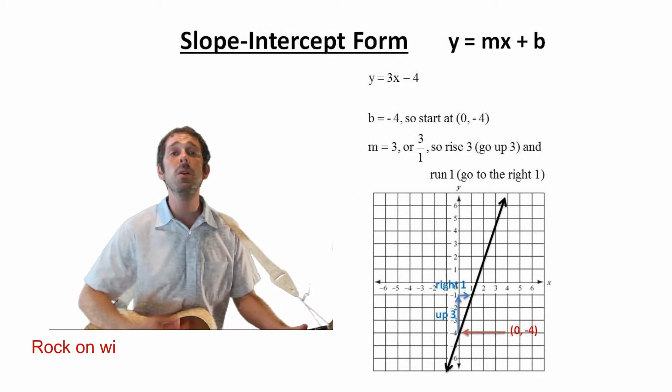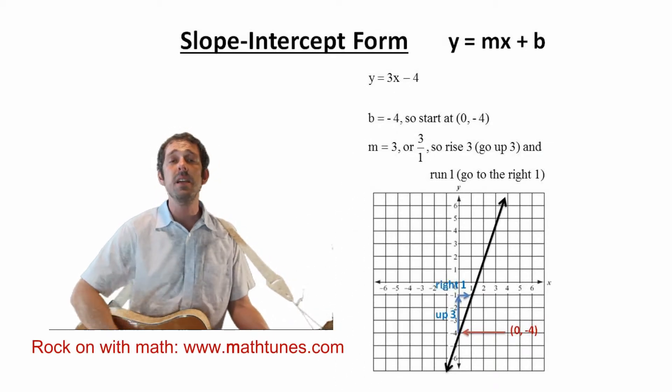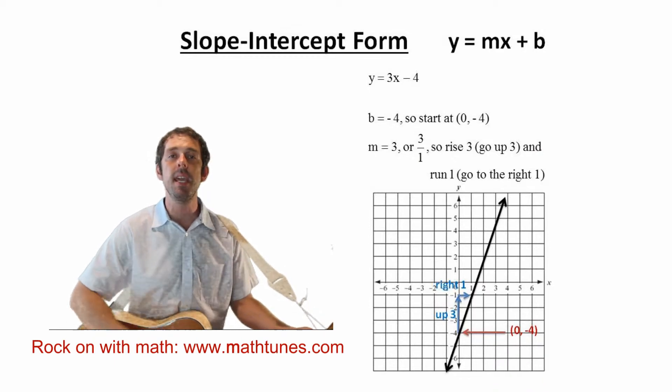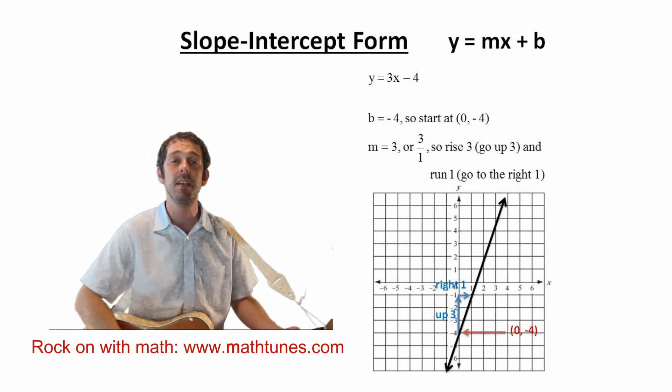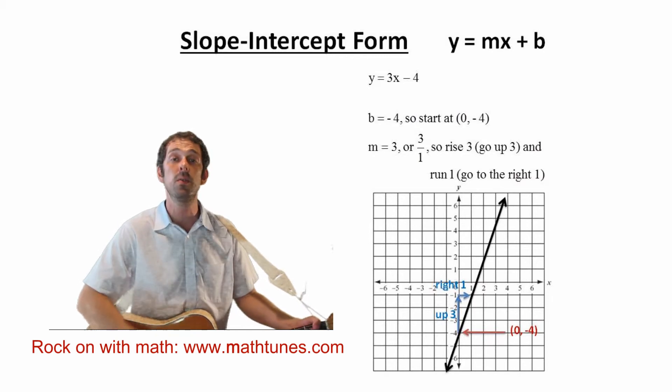Slope-Intercept Form: Start at (0, b), and then you're gonna calculate rise over run.